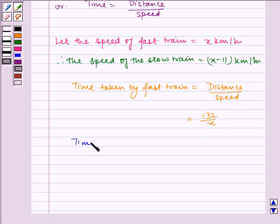And time taken by slow train is equal to 132 by x minus 11 hours.